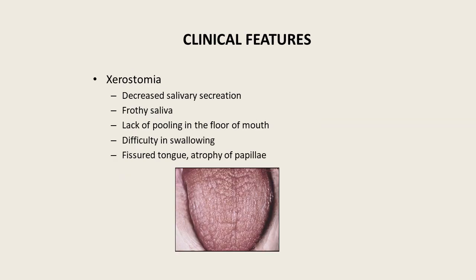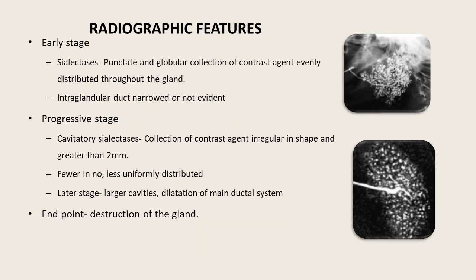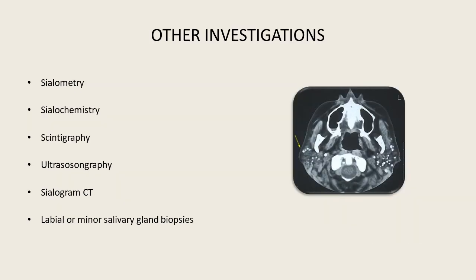In xerostomia, there is a decrease in salivary secretion, frothy saliva, lack of pooling in the floor of the mouth, and difficulty in swallowing. The patient mostly shows a fissured tongue and atrophy of papillae. In radiographic examination, the early stage shows punctate and globular collection of contrast agent evenly distributed throughout the gland; in the progressive stage, fewer and less formally distributed collections greater than 2 mm are seen; and in the later stage, dilation of the main ductal system and ultimately destruction of the gland is seen. Other investigations include sialometry, sialochemistry, scintigraphy, ultrasonography, sialogram, and labial and major salivary gland biopsies.